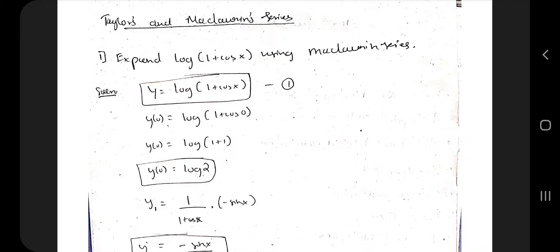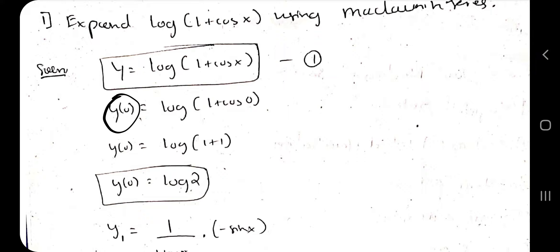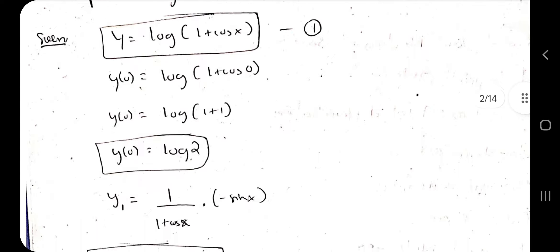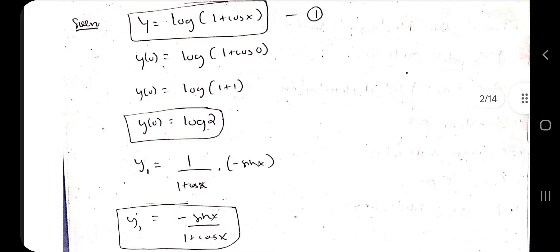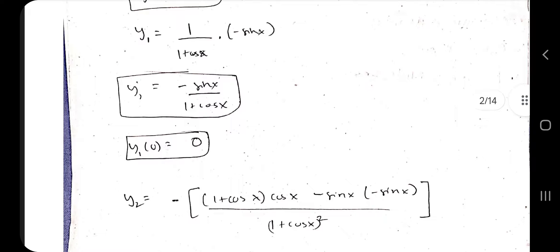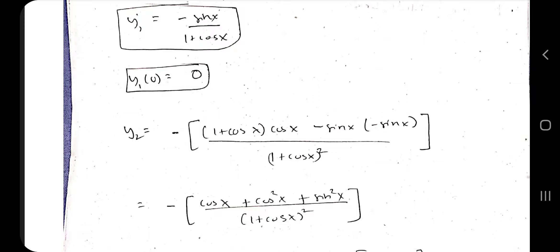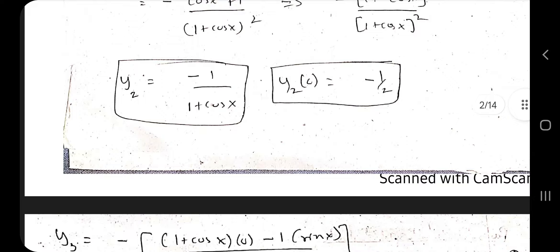From an exam perspective, only the Maclaurin series is asked, so I'll be solving that problem. The first question is: expand log(1 + cos x) using Maclaurin series. The steps you have to follow are: write it as y = log(1 + cos x), and after that find y(0) — meaning wherever you find x, put it as 0. In this case the answer is log 2. After getting y(0), you have to find y₁ by differentiating with respect to x.